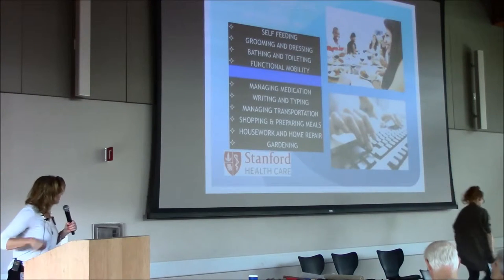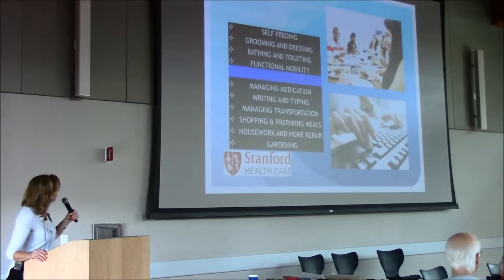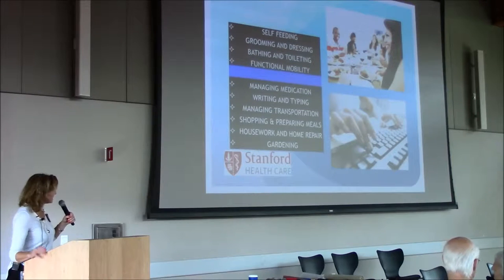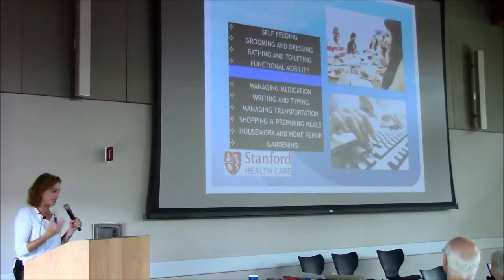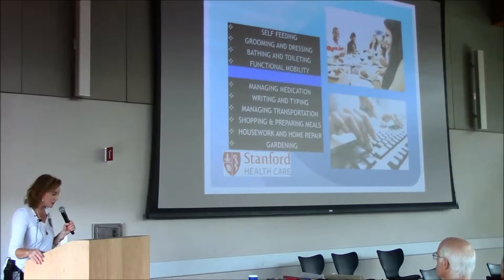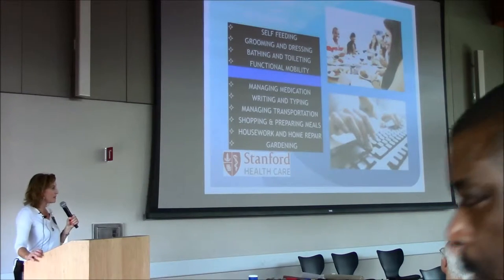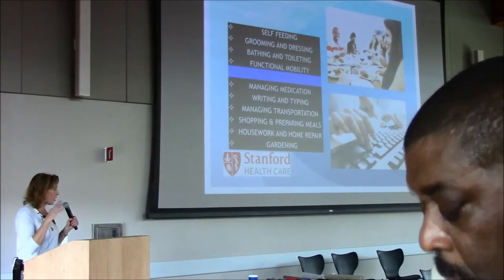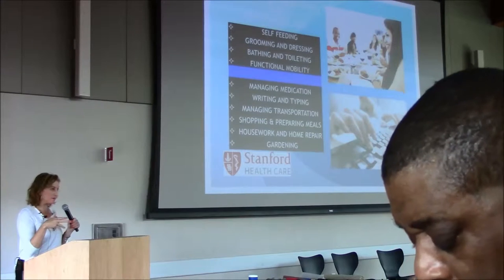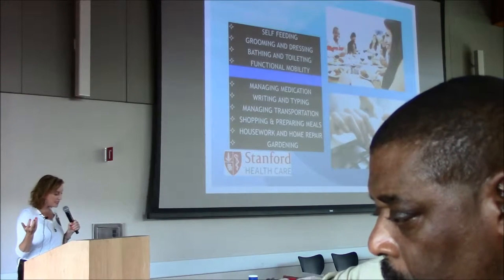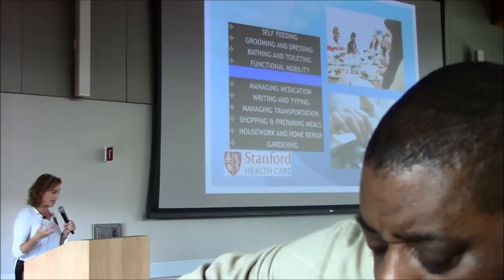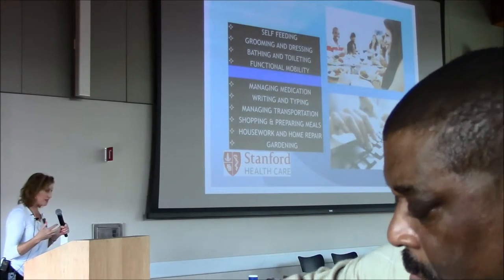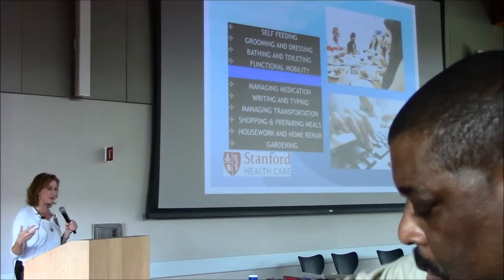So just the basic definition: activities of daily living, which we call the first important aspects of care, include self-feeding, grooming and dressing, bathing and toileting, and functional mobility. These are things that we work with individuals on and help them set goals towards these types of tasks.